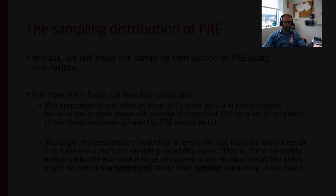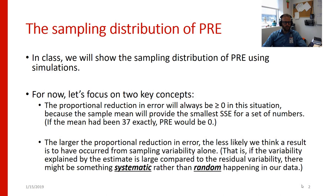In class, we're going to show how the sampling distribution of PRE kind of emerges using simulations, and we'll also show how the sampling distribution of the F statistic emerges due to simulation. For now, we want to focus on two key concepts: the proportional reduction in error is always going to be greater than or equal to zero in a situation where we're comparing the augmented model to the compact model.